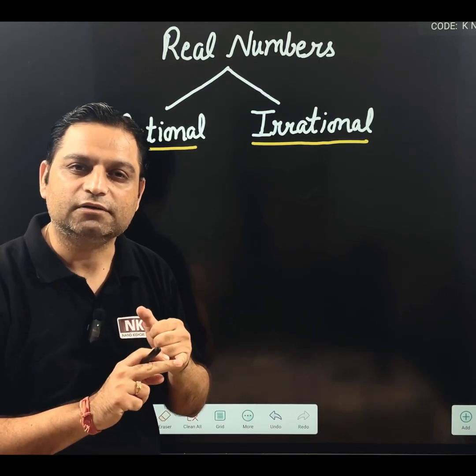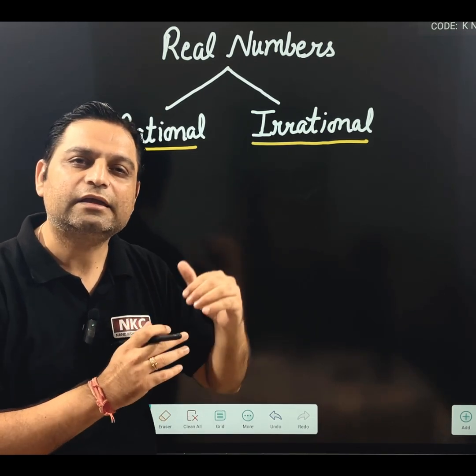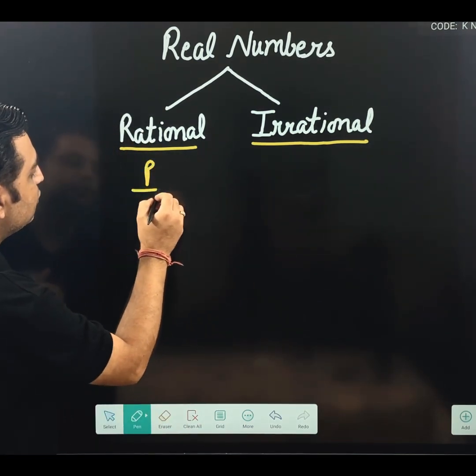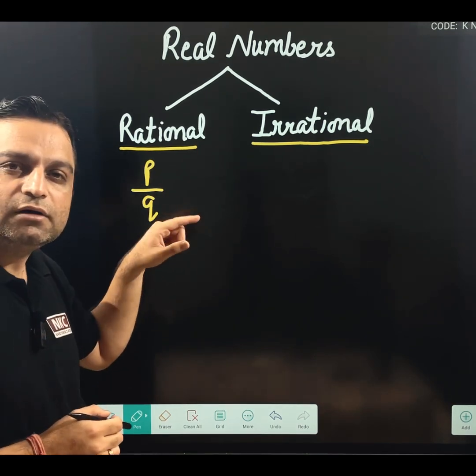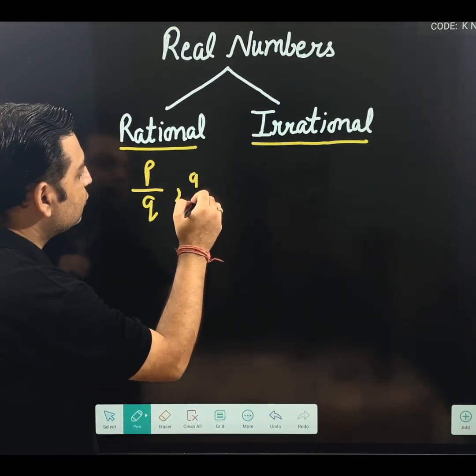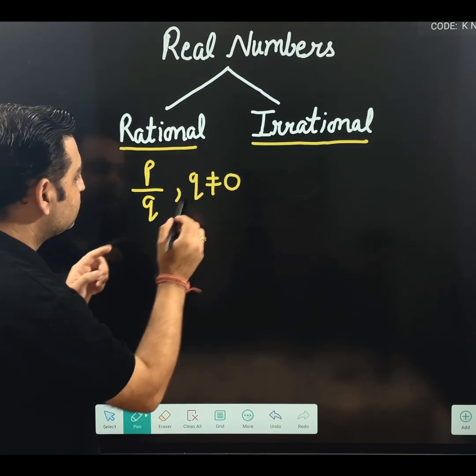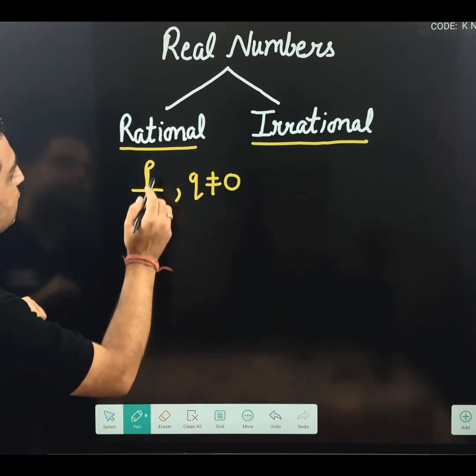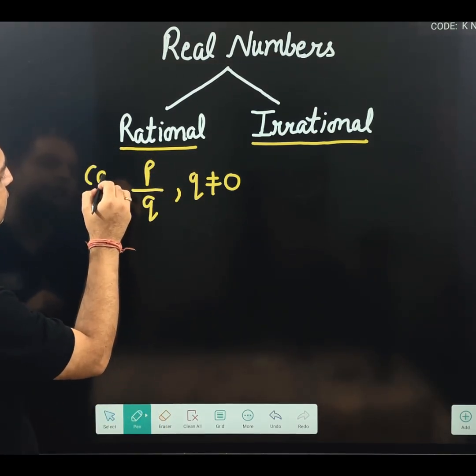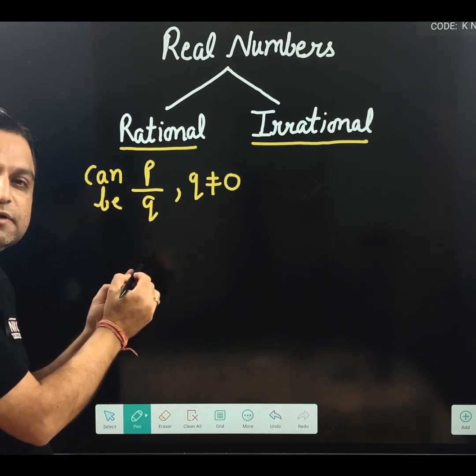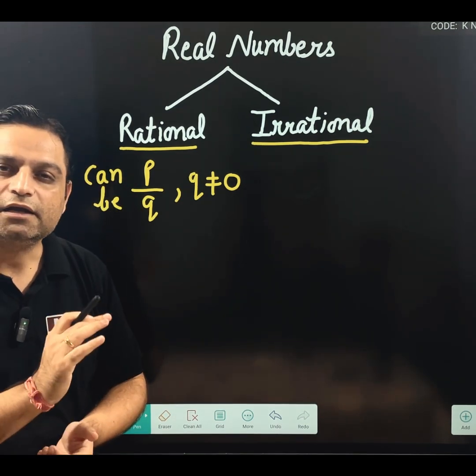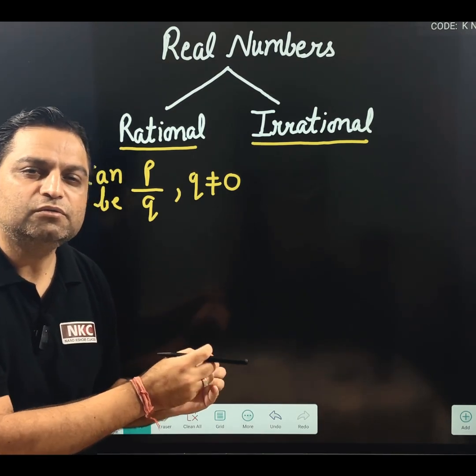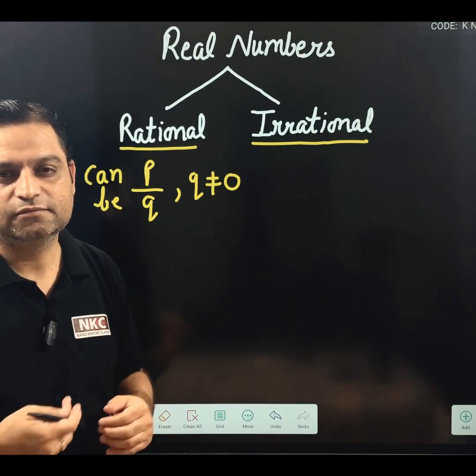According to the definition of rational, a number can be expressed in the form of P over Q, where P and Q are integers and Q is not equal to 0. Obviously, denominator cannot be 0. But if you remember, if you have heard the definition carefully, it is written that numbers which can be expressed in the form of P upon Q. Can be means they are not necessarily in the form of P upon Q, which can be expressed.